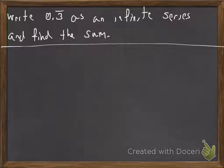So what we're going to do is we're going to write out what it means. So 0.3 bar means 0.33333, etc.